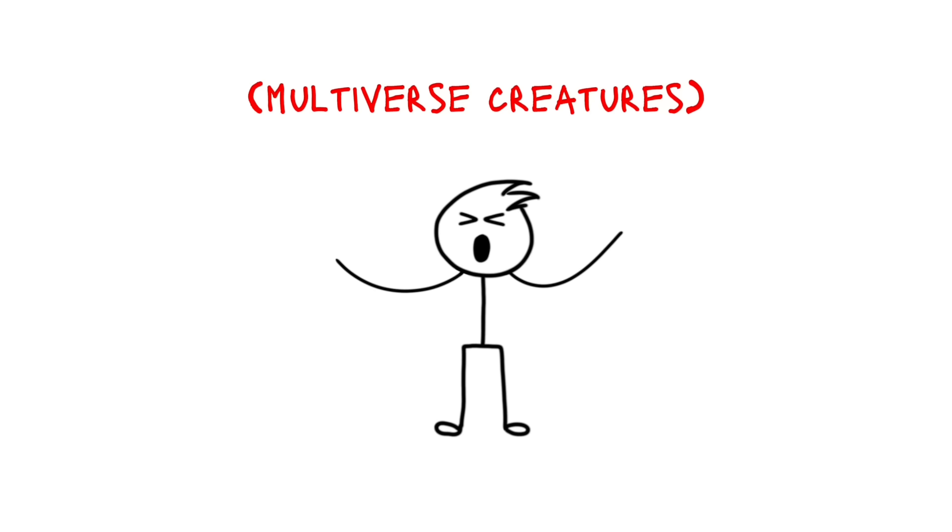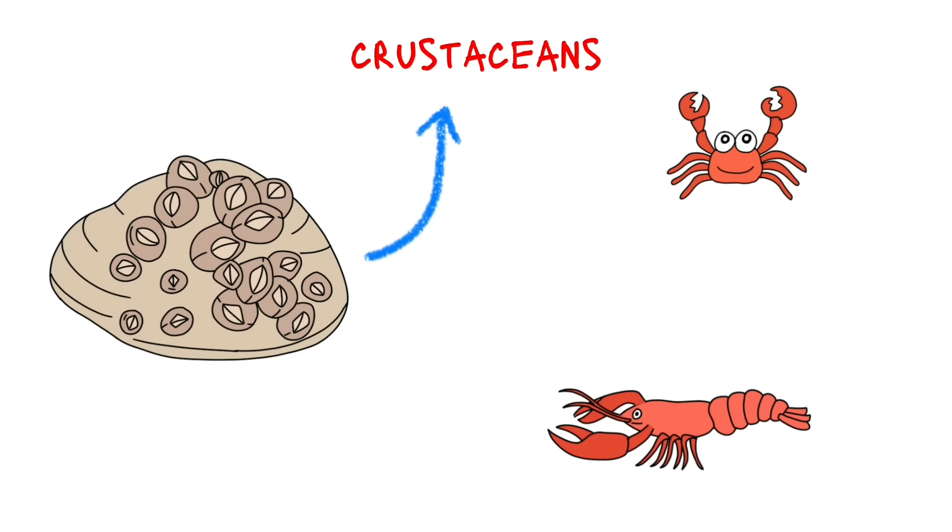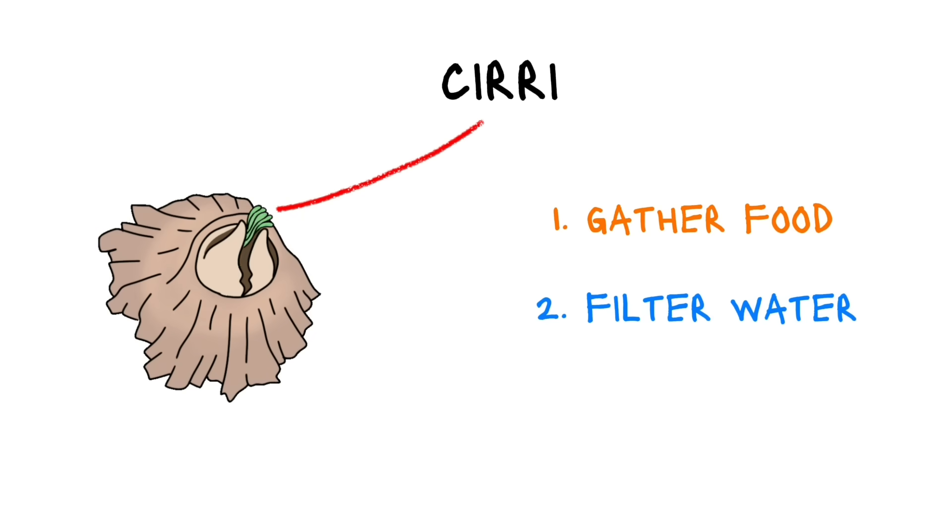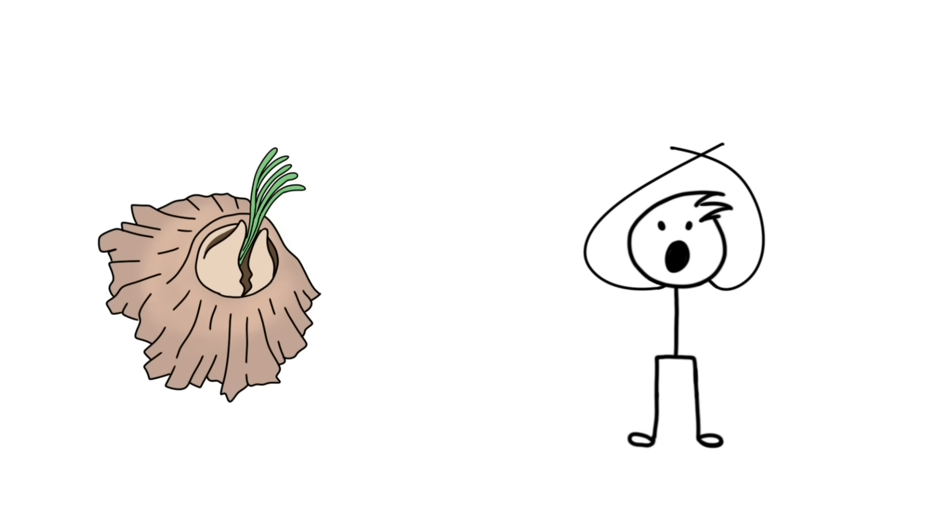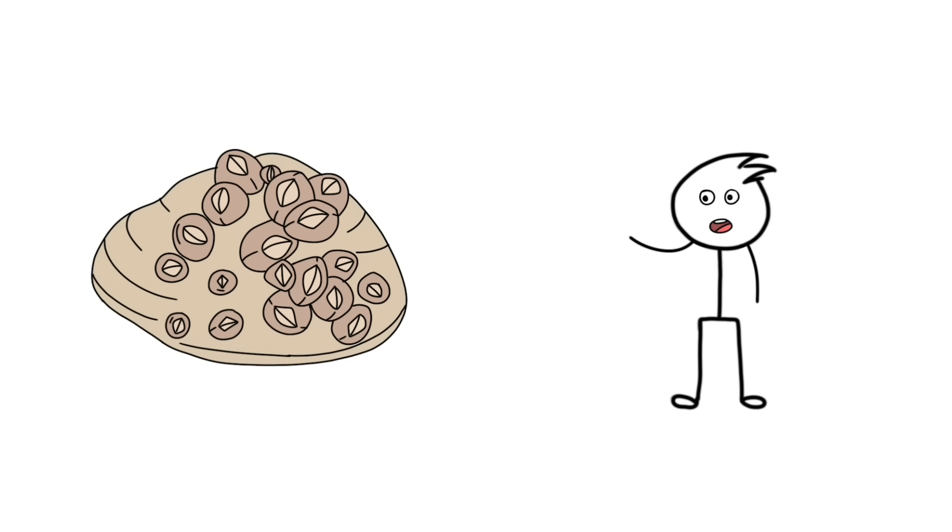Barnacles are crustaceans, just like crabs and lobsters. They have these feathery, leg-like structures called ciri that gather food and help to filter the water. Don't confuse this ciri with this ciri. It's completely useless. Barnacles are cemented to the surface and can't move. They always stay inside that shell.